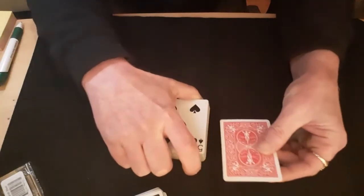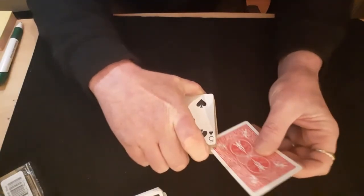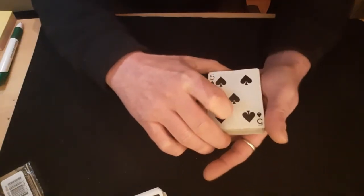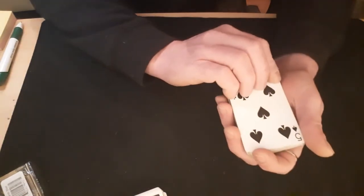So you slide out the indifferent card and you stick that somewhere into the middle of the packet.